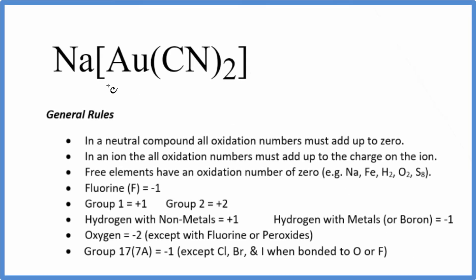In this video, we'll find the oxidation numbers for the gold, the Au, in Na[Au(CN)₂]. This is sodium dicyanoaurate.